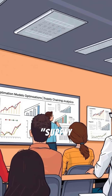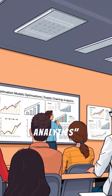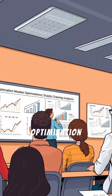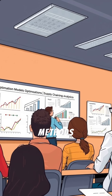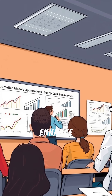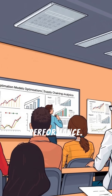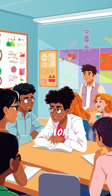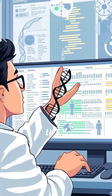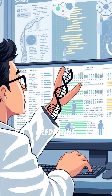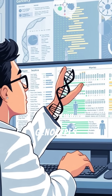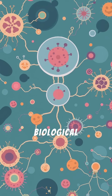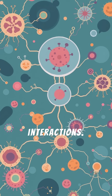Supply Chain Analytics demonstrates optimization models and statistical methods to enhance supply chain performance. Explore genetics through The Secret of Life, which delves into predicting genotypes and phenotypes, uncovering the foundations of biological interactions.